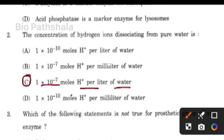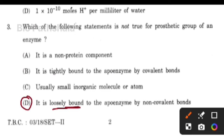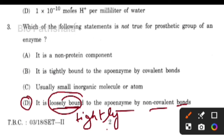Next question: which of the following statement is not true for prosthetic group of an enzyme? The correct option is option number D, i.e., it is loosely bound to apoenzyme by non-covalent bond. This is wrong — the prosthetic group is tightly bound to the apoenzyme. The apoenzyme is the proteinaceous part, and the non-protein component is bound tightly; together they form the holoenzyme.